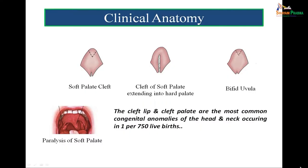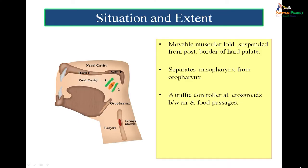In this particular figure, we can visualize that the soft palate is deviating towards the normal side due to the 10th nerve lesion. This soft palate has a vital role to play. It is a muscular ridge whose function is to control traffic and provide normal physiological phenomena. The soft palate is a movable muscular fold suspended from the posterior border of the hard palate. It separates the nasopharynx from the oropharynx — a traffic controller at the crossroads between air and food passages.